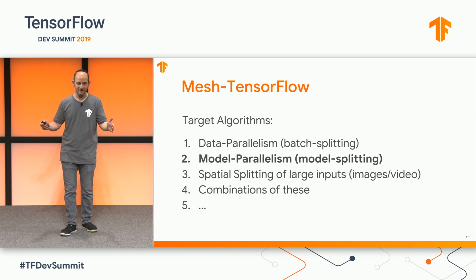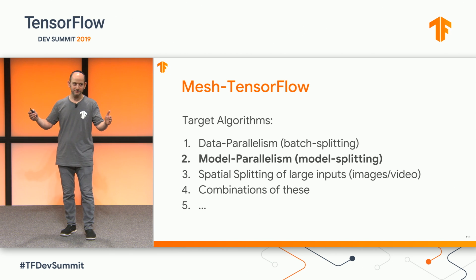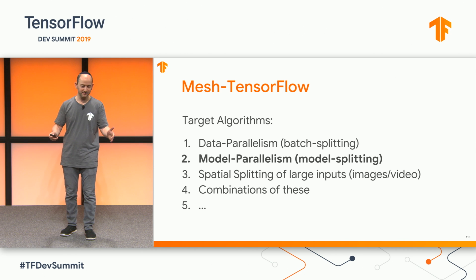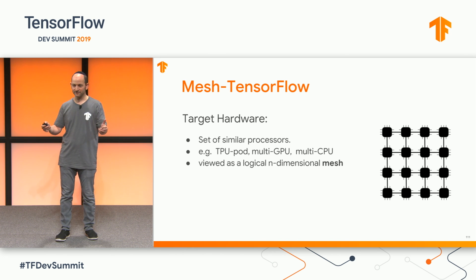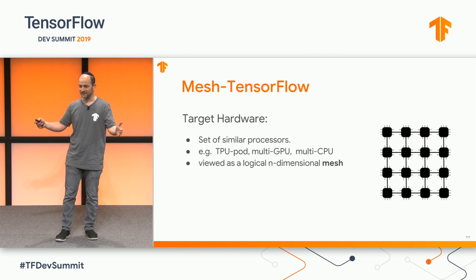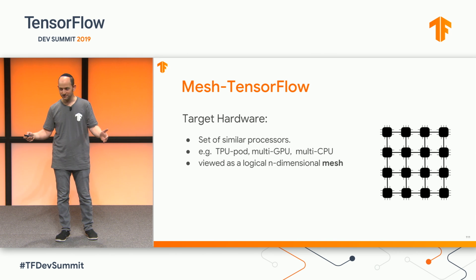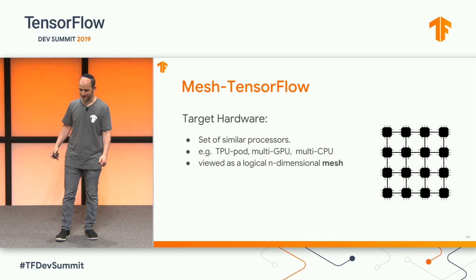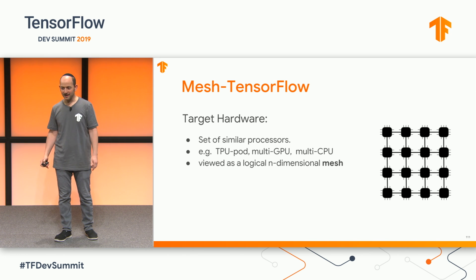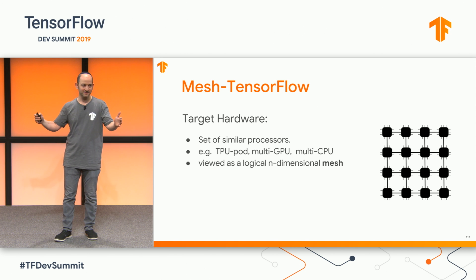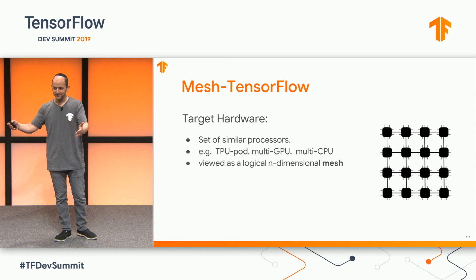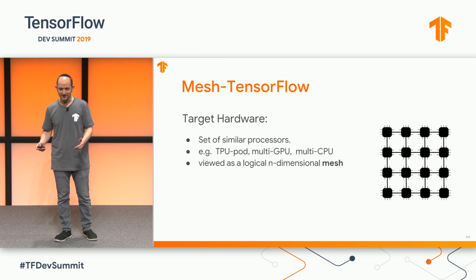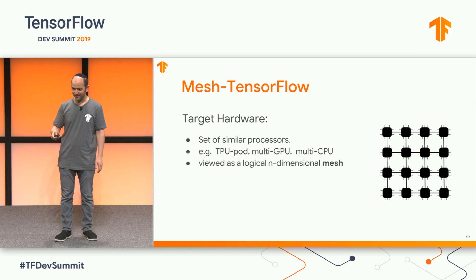Mesh TensorFlow should be able to implement data parallelism, model parallelism, and split in different dimensions — like splitting an image or video spatially, or any combinations of these things. We're targeting hardware where you have a homogeneous set of similar processors, ideally well-connected, like a TPU pod. We've got these two-dimensional supercomputers at Google that we've been using. You view your set of processors as an n-dimensional mesh — it doesn't have to correspond to a physical n-dimensional mesh, but performance will depend on those considerations.